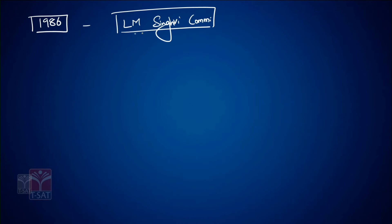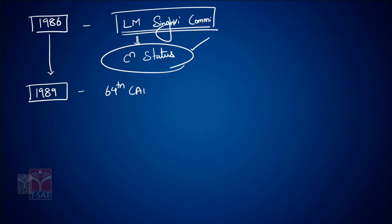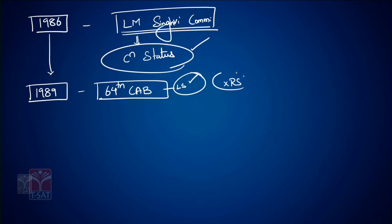So in 1986, the LM Singhvi Committee was constituted by the Rajiv Gandhi government, which recommended constitutional status to the existing PRIs. On the recommendations of the LM Singhvi Committee, in 1989, the 64th Constitution Amendment Bill was initiated, passed in Lok Sabha, but rejected in Rajya Sabha.